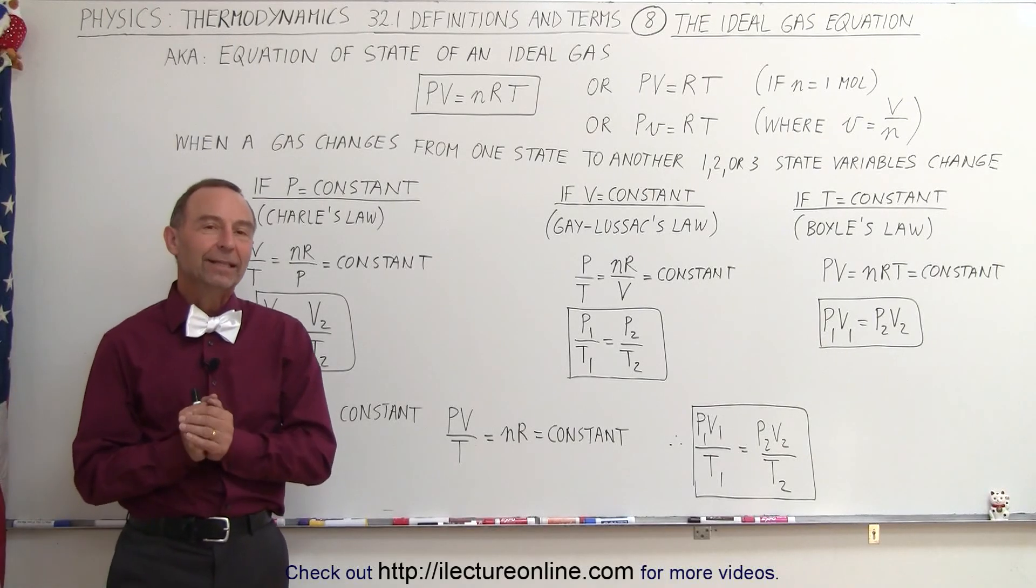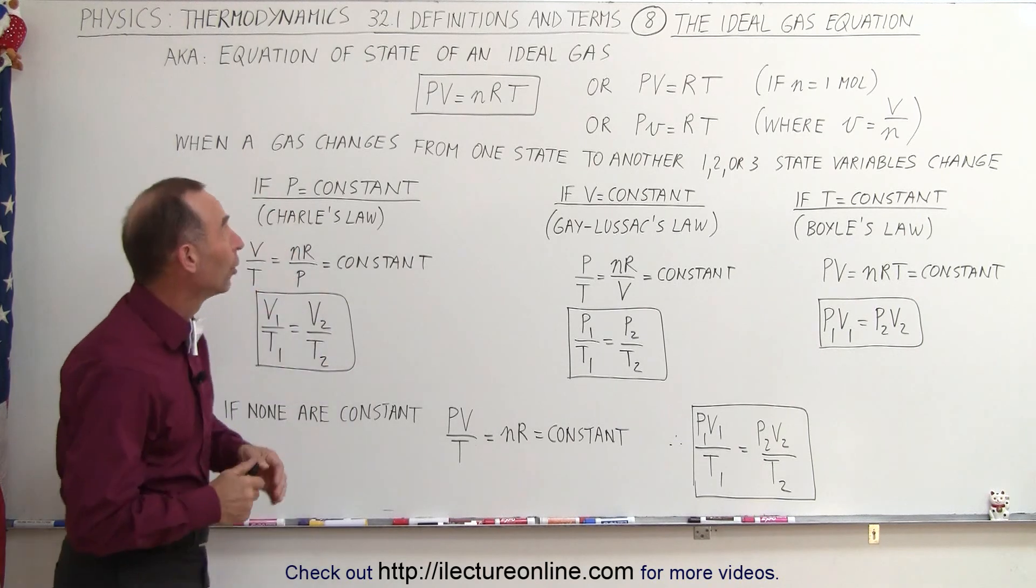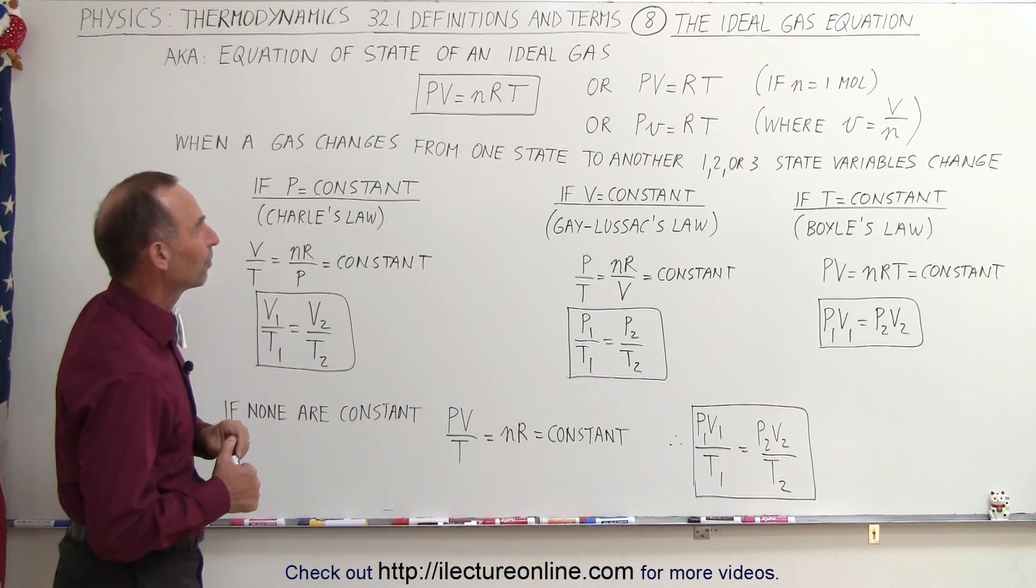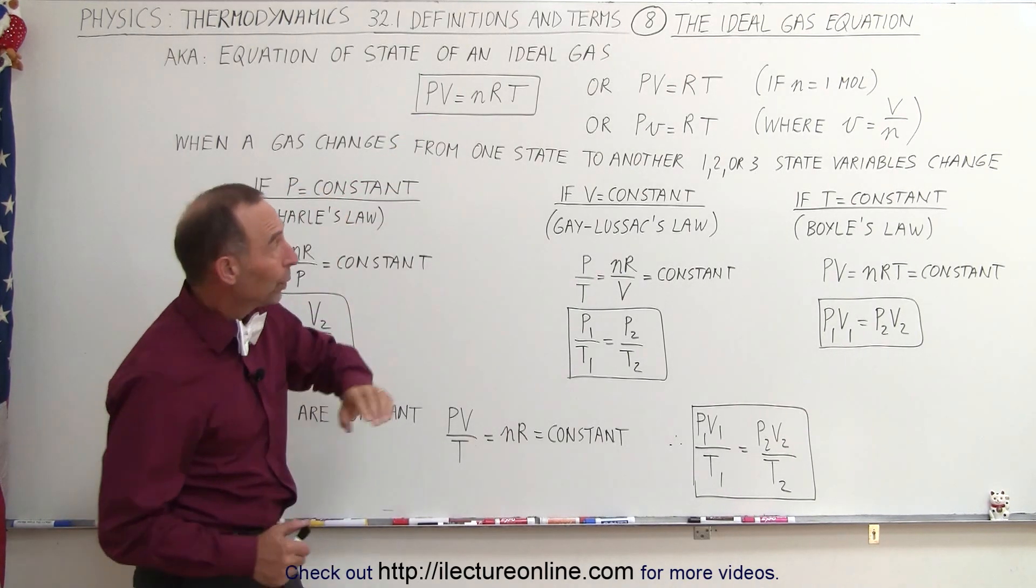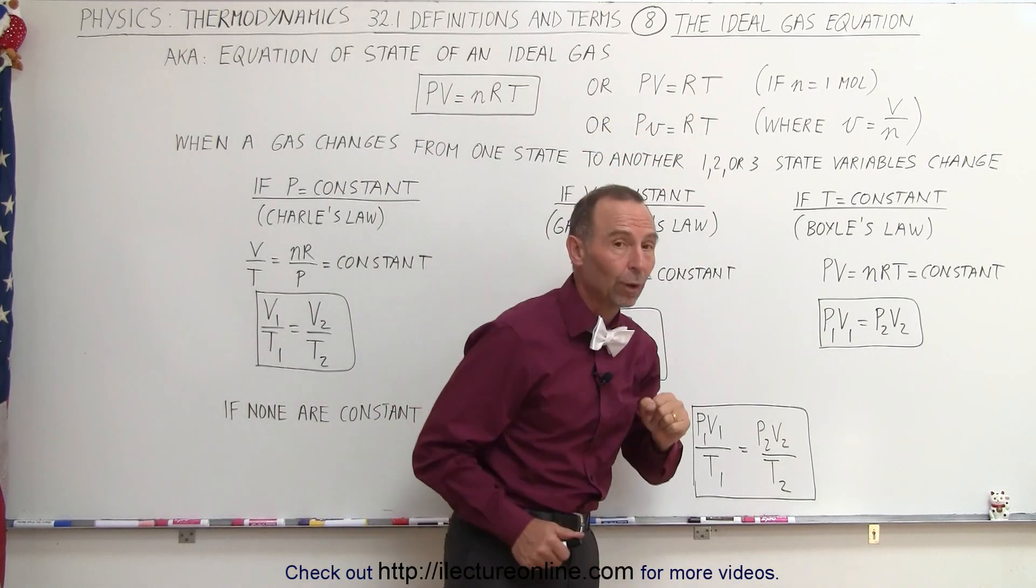Welcome to ElectronLine. Now let's take a closer look at the ideal gas equation, also known as the equation of state of an ideal gas. So it's typically written as PV equals nRT, or we can write it as PV equals RT when we assume that n equals 1 mole.